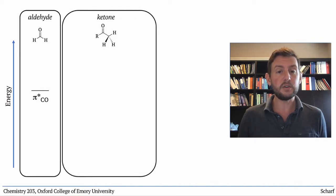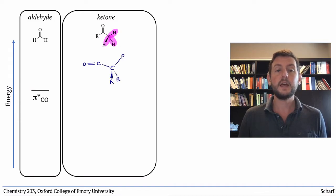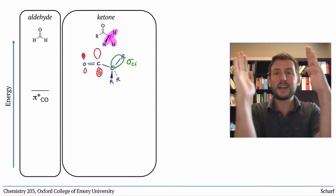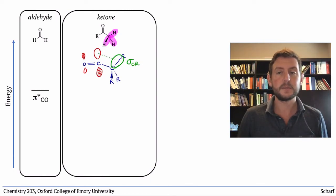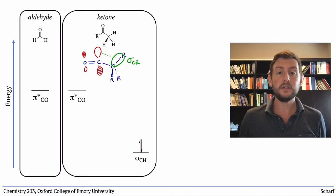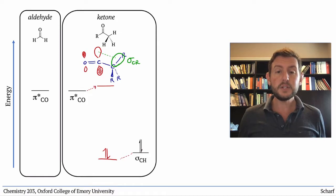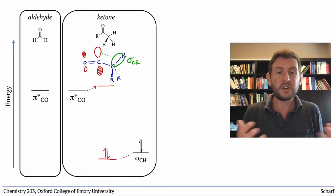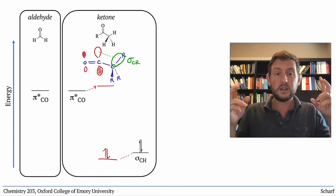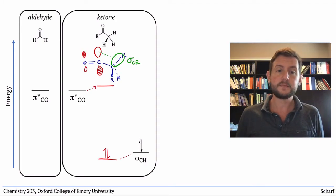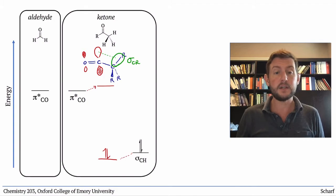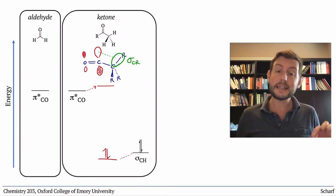If we move to a ketone, there are alkyl groups adjacent to the CO pi star orbital. And those alkyl groups have filled sigma bonding orbitals, either CC or CH, that can overlap with the CO pi star. When a filled orbital overlaps with an empty one, we get new orbitals. One lower in energy, where the electrons go, and one higher in energy. Since the original CO pi star orbital and the filled sigma bonding orbital were very far apart in energy, this effect is pretty minimal. We're not really making any new true bonds. We're just tweaking the energies of the existing orbitals. But there is a small effect. The CO pi star orbital of a ketone is slightly higher in energy than the CO pi star orbital of an aldehyde. And ketones are slightly less electrophilic than aldehydes.